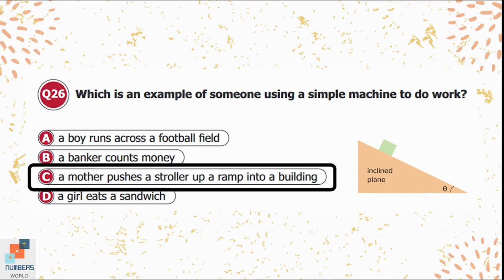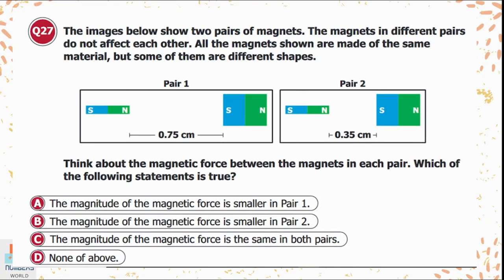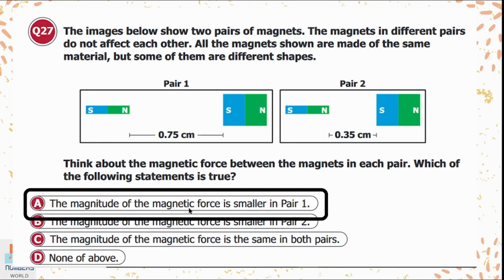Question 27: The images show two pairs of magnets made of the same material but different shapes. Think about the magnetic force between the magnets in each pair. Option A: the magnetic force is smaller in pair one. Option B: smaller in pair two. Option C: the same in both pairs. Option D: none of the above. In pair one the distance between magnets is greater than in pair two, so the magnitude of magnetic force is smaller in pair one — option A is correct.